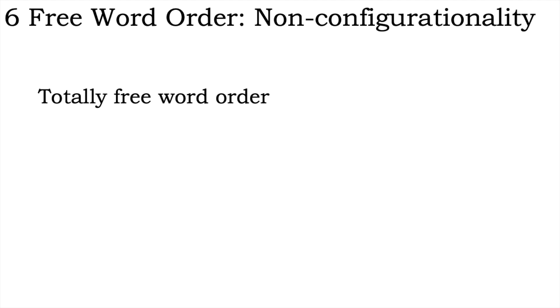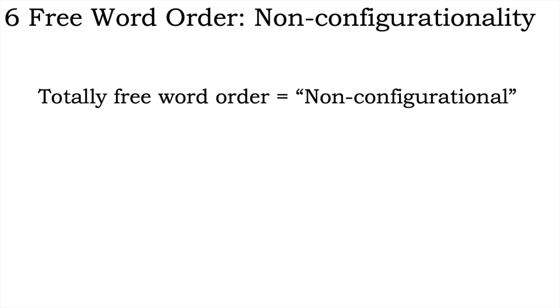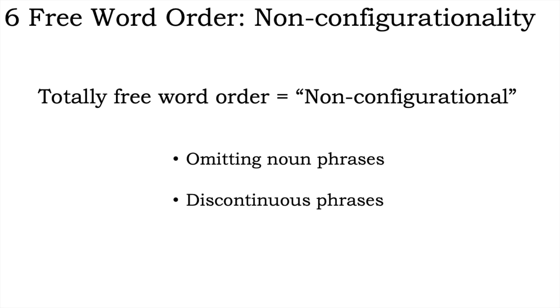Some languages go even further than this and have completely free word order. The order of elements is determined solely by the current discourse needs. Such languages are known as non-configurational. There are a few characteristics that tend to go with non-configurationality, including extensively omitting noun phrases and discontinuous phrases. I'll discuss them, albeit only briefly.